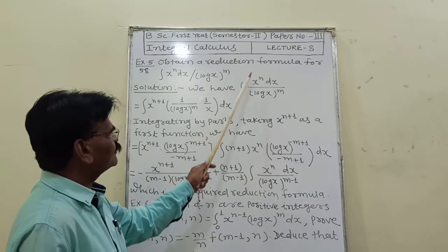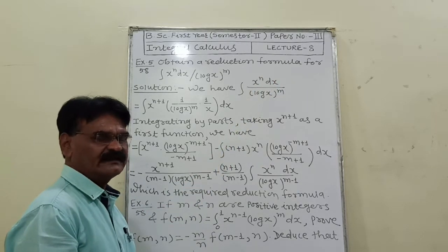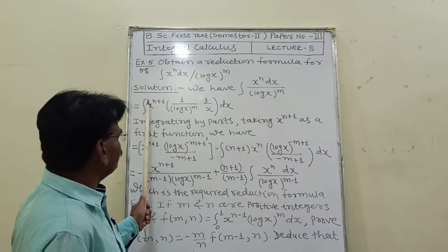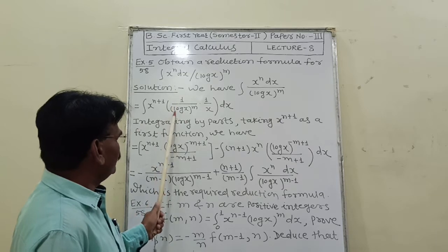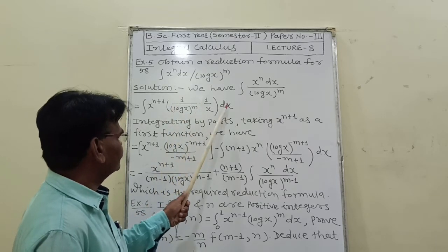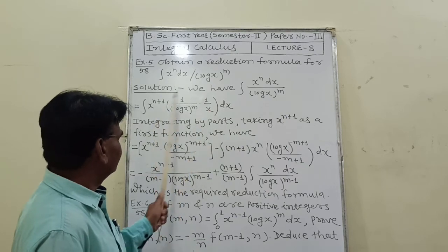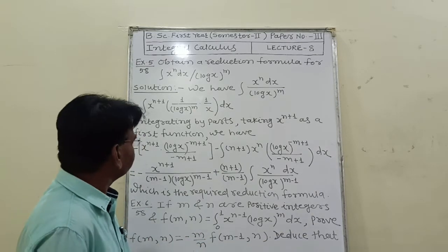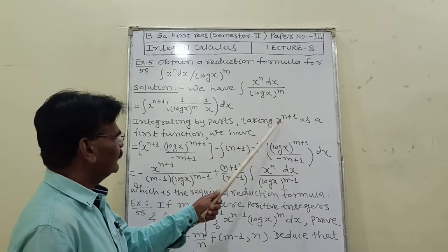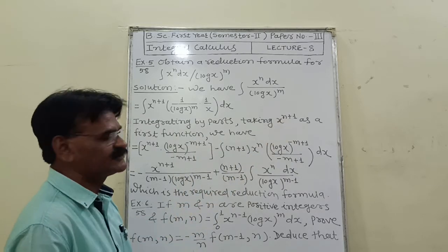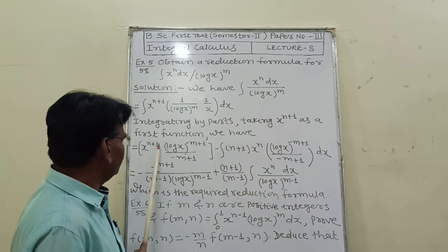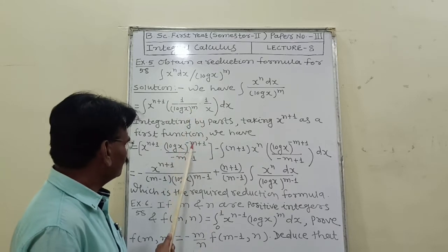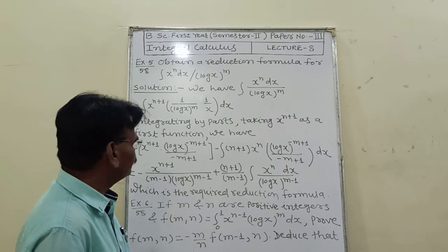Solution. We have the integral of x^n dx divided by (log x)^m. This can be written as the integral of x^(n+1) times 1/(log x)^m times 1/x dx. The x terms cancel, leaving the integral of x^m dx divided by (log x)^m. Integrating by parts, taking x^(n+1) as the first function, we get x^(n+1) times (log x)^(-m+1) divided by (-m+1).